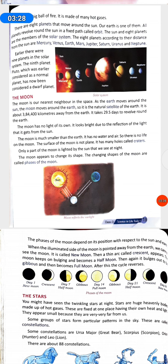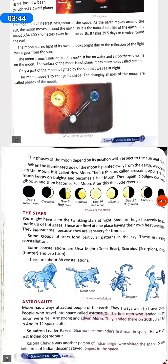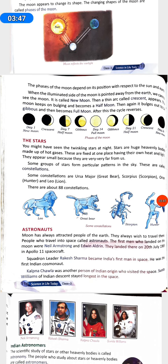The moon appears to change its shape. The changing shapes of the moon are called phases of the moon. The phases of the moon depend on its position with respect to the sun and earth. When the illuminated side of the moon is pointed away from the earth, we cannot see the moon. It is called new moon. Then, a thin arc called crescent appears. The moon keeps on bulging and becomes a half moon. Then, again it bulges to be gibbous and then becomes full moon. After this, the cycle reverses.